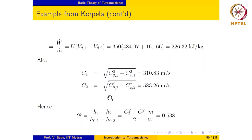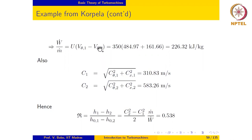I encourage students to go through this example several times and make sure they understand each and every step clearly — particularly the construction of the velocity triangles at the inlet and outlet using the given information, and also paying attention to the signs of Vθ1 and Vθ2 when calculating the specific power output.